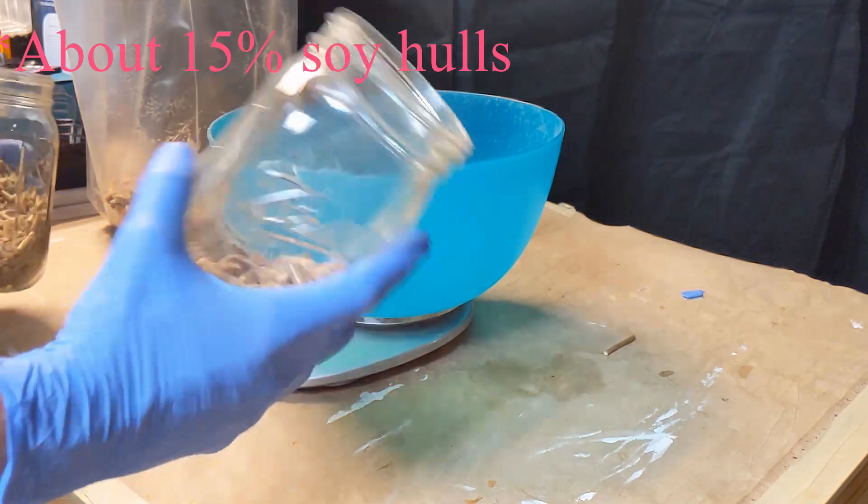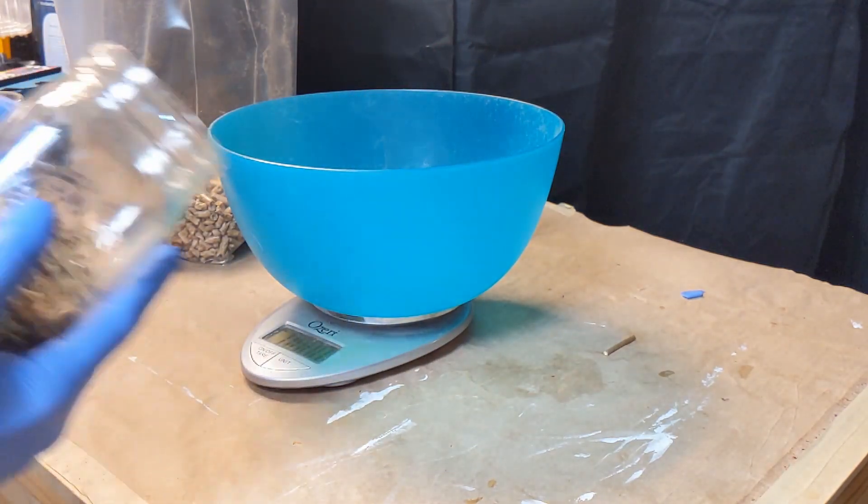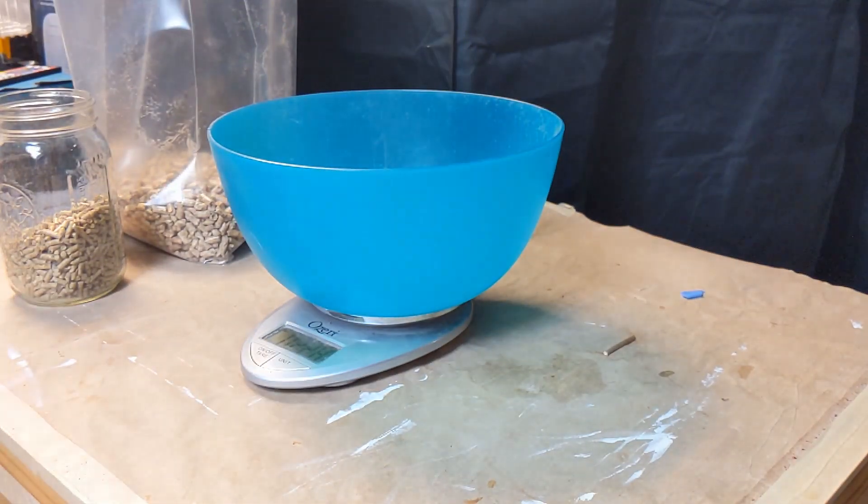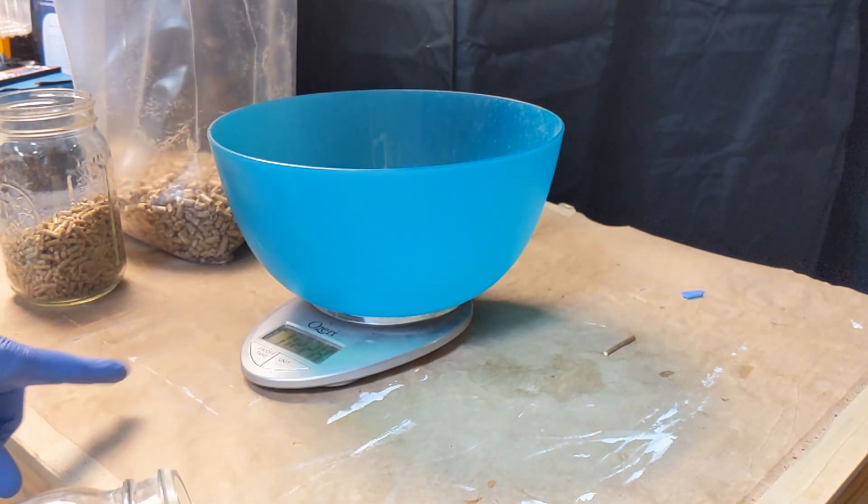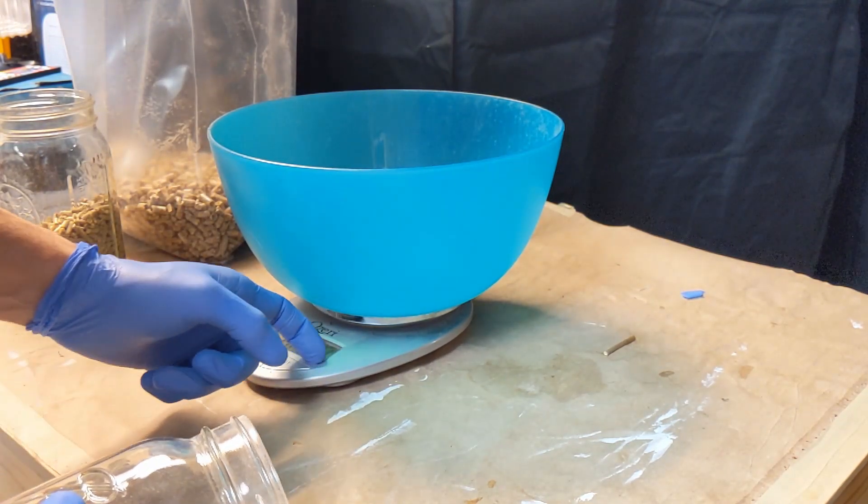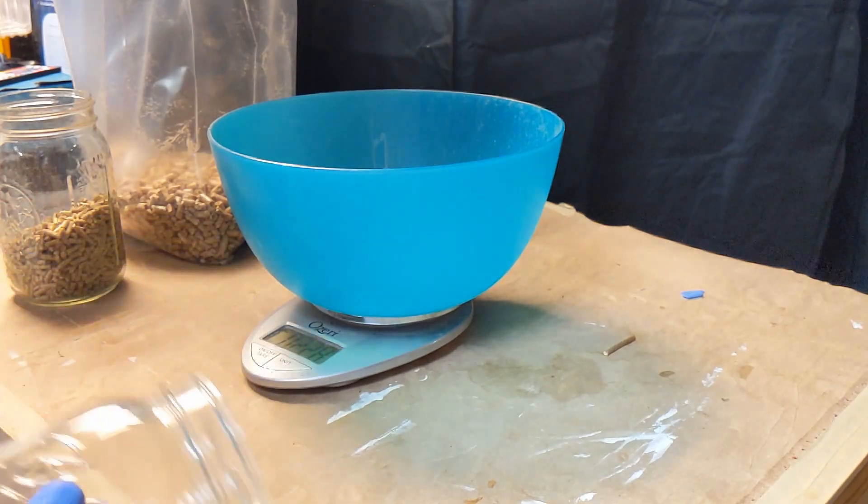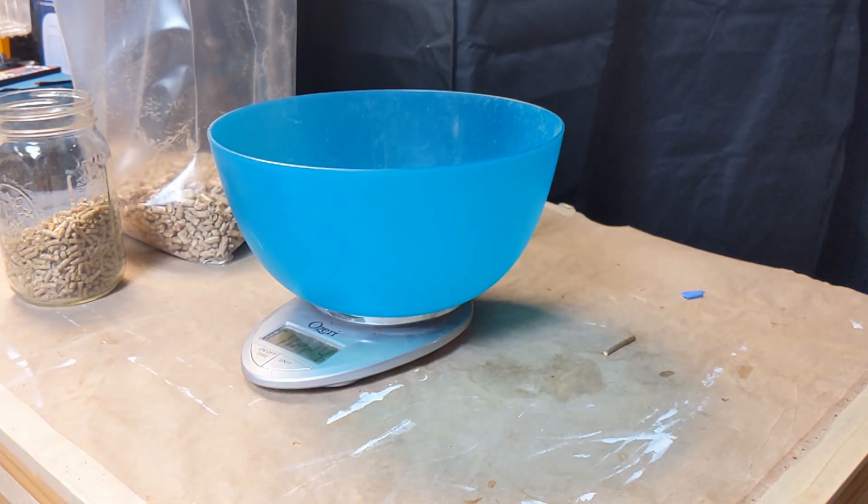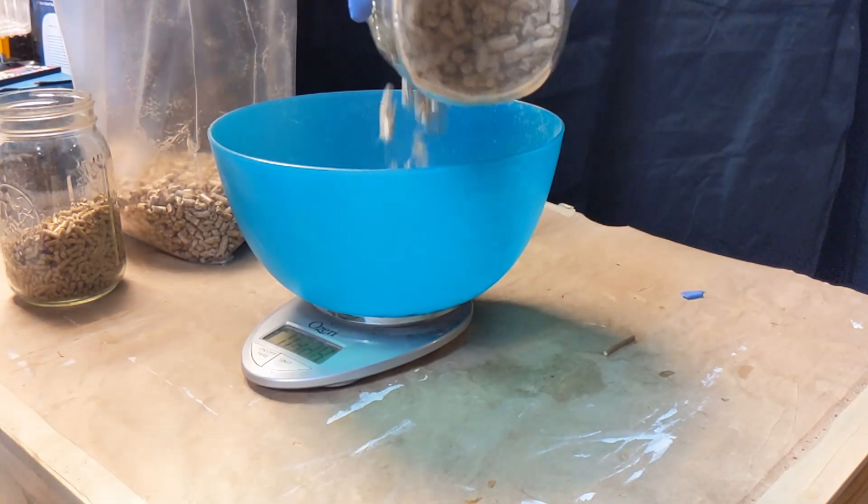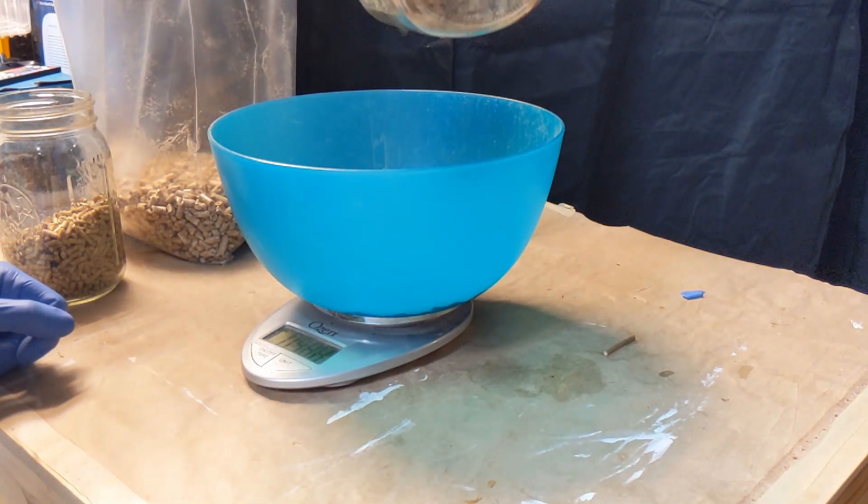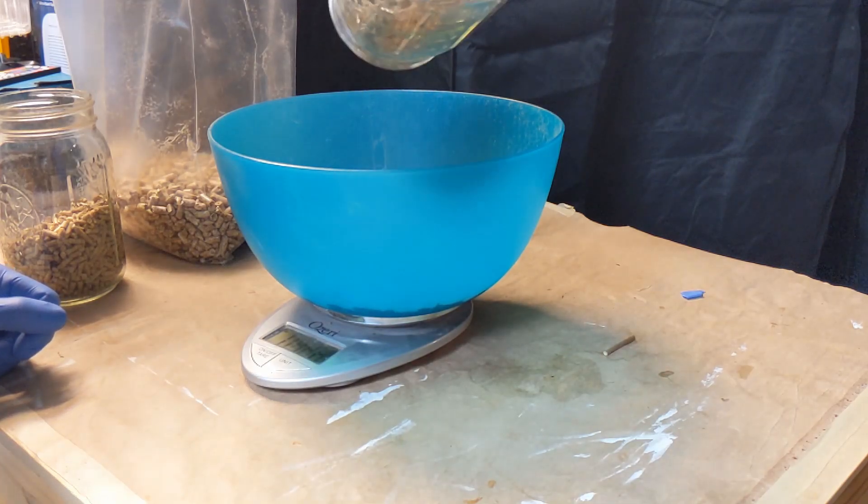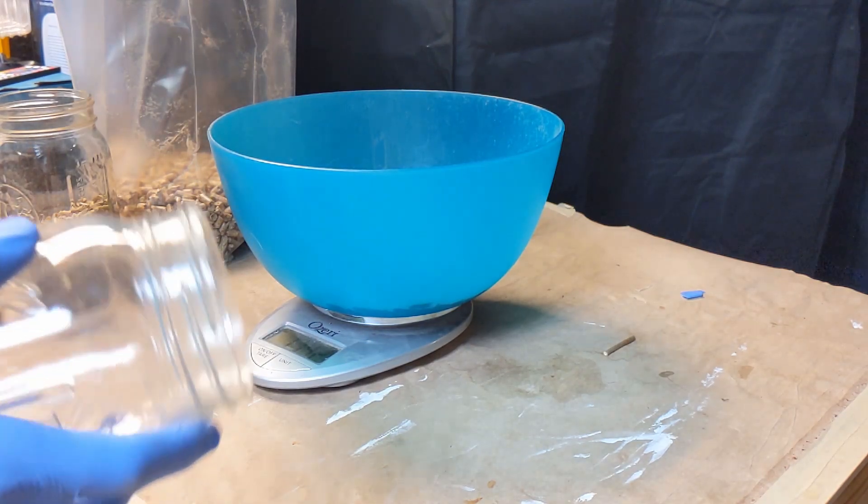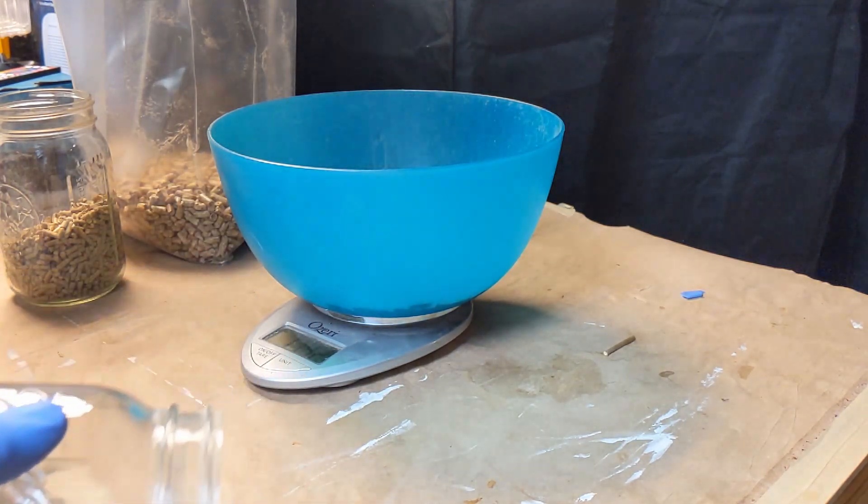We got some hardwood fuel pellets and some soy hulls pellets, and I'm gonna get the wood pellets to about 1.7 pounds. 1.7 pounds of hardwood pellets and then I'll go 0.3 pounds of the soy hulls.